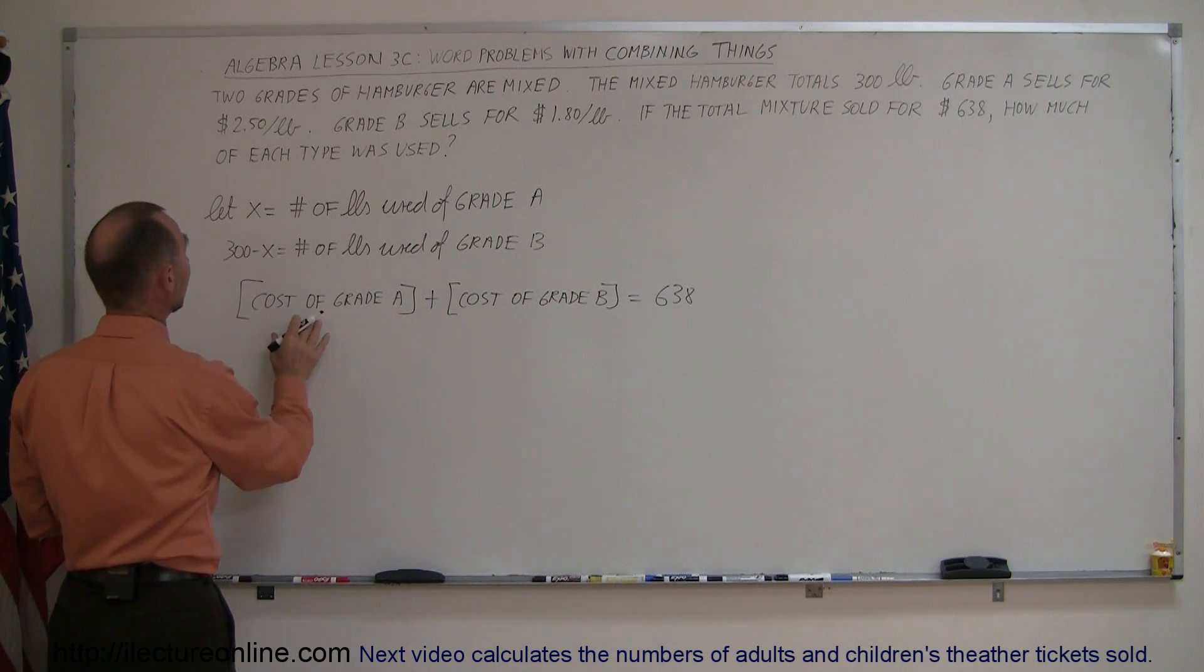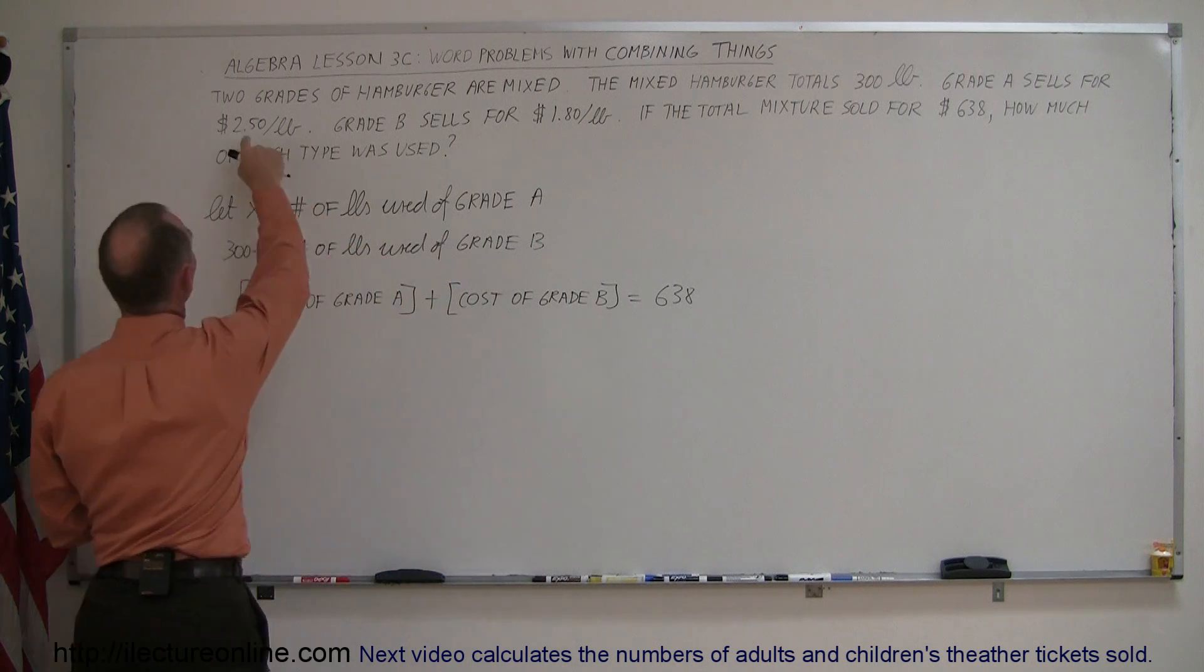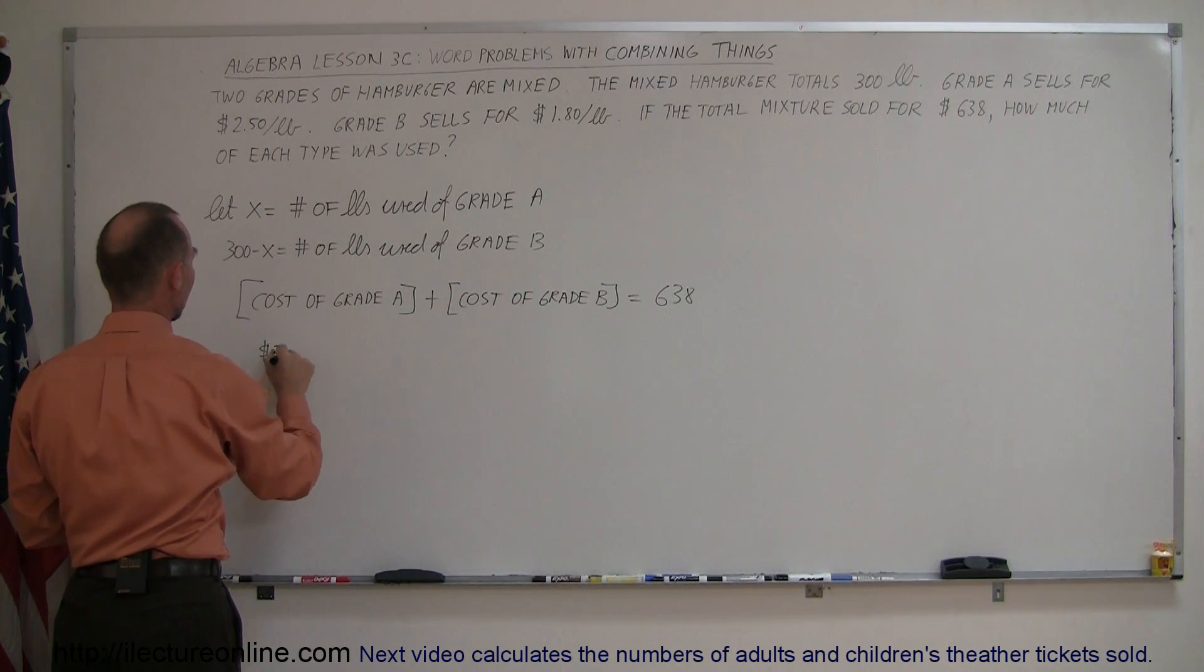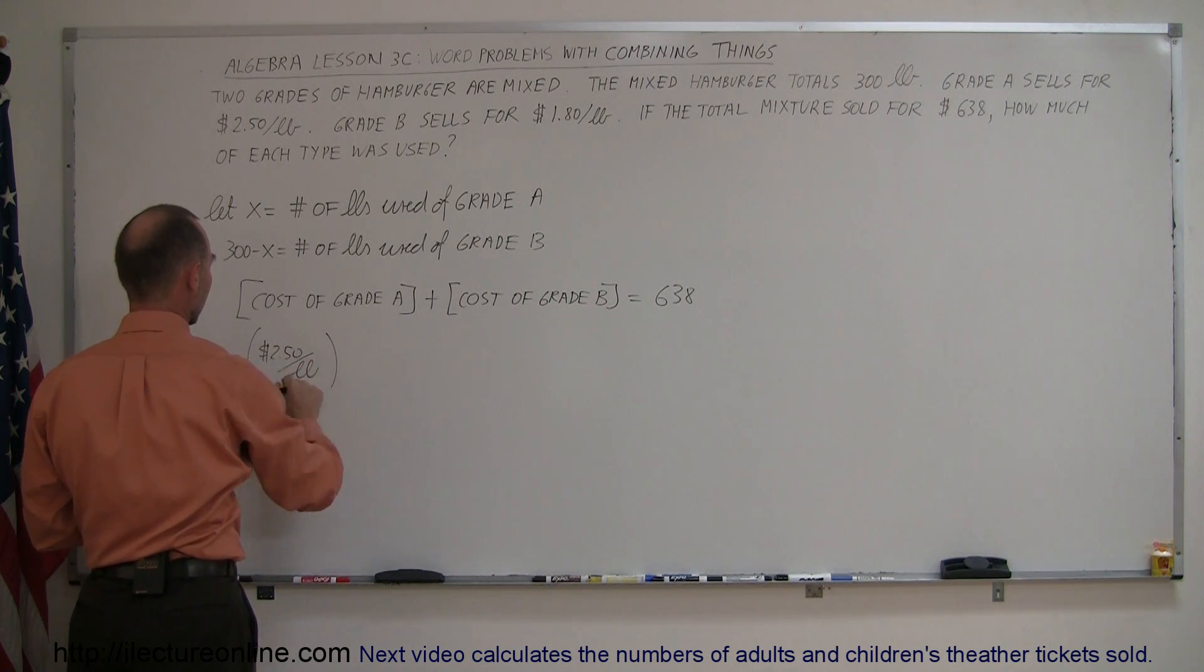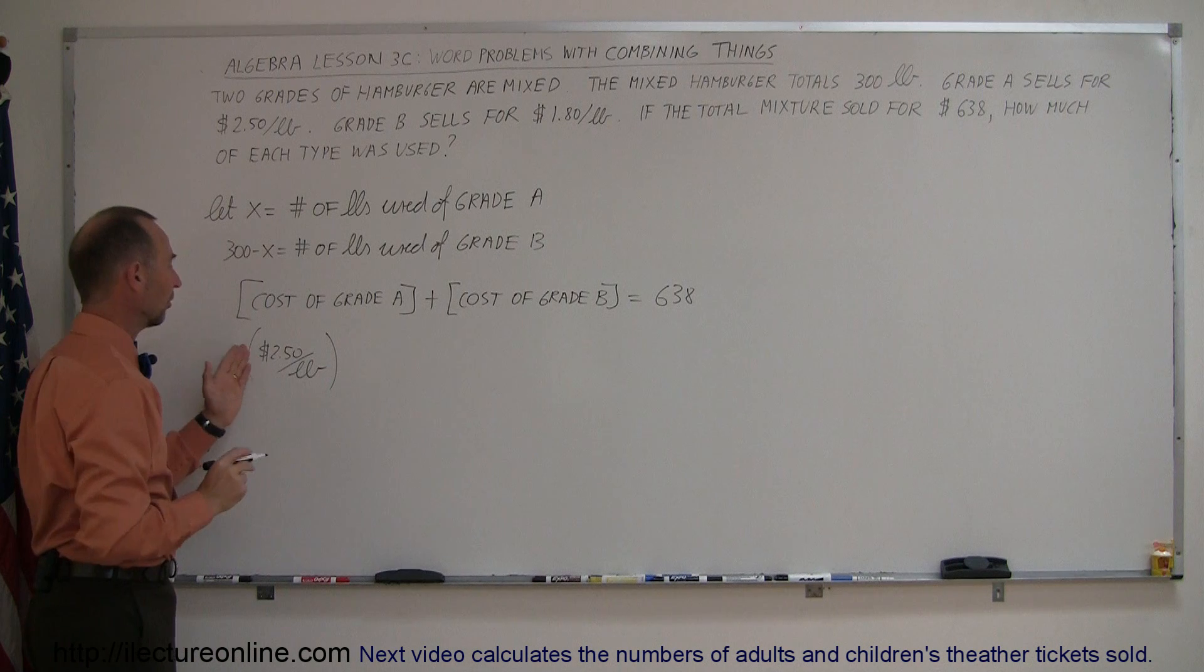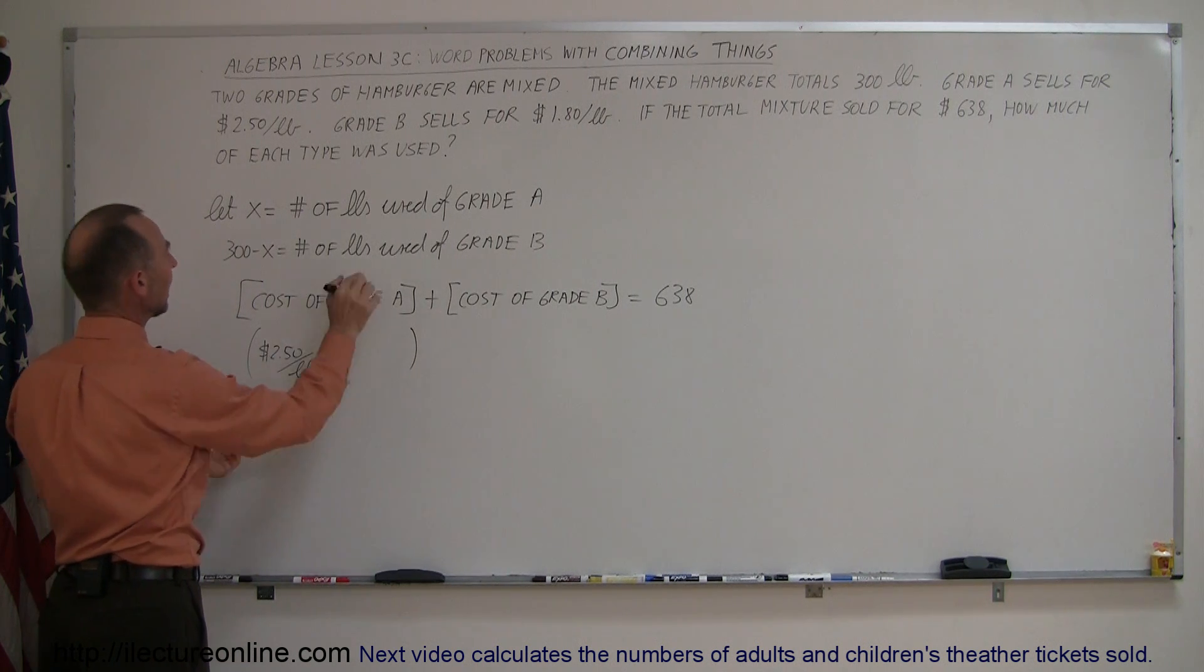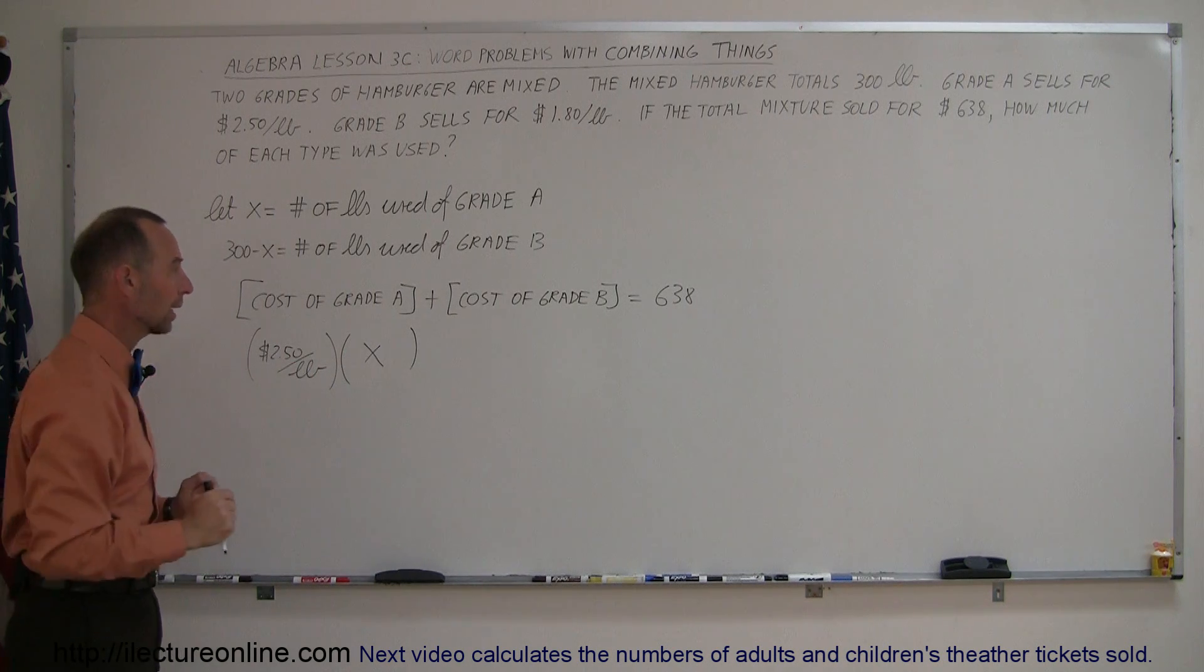So what is the cost per pound for grade A? For grade A, we had a cost of $2.50 a pound. So $2.50 per pound, that's the cost per pound, and we multiply times the number of pounds for grade A, and here we define grade A as being X number of pounds. So this much per pound times this many pounds gives you the total cost for grade A hamburger.